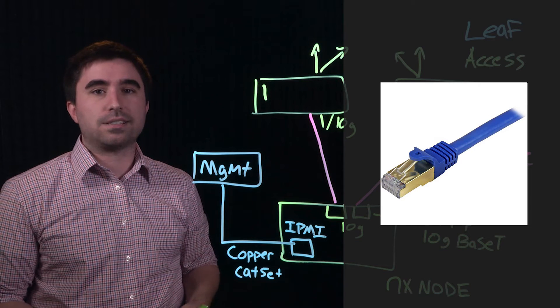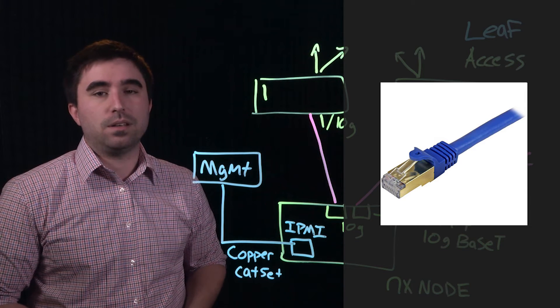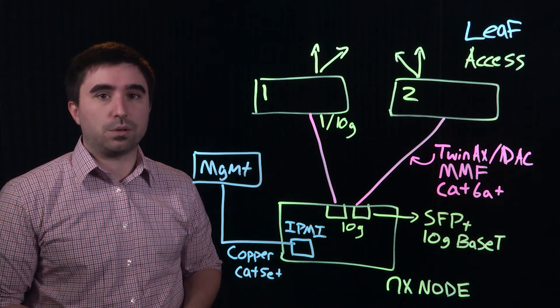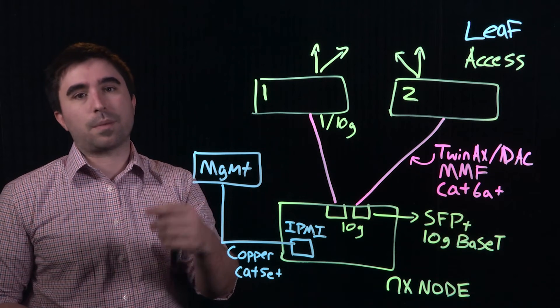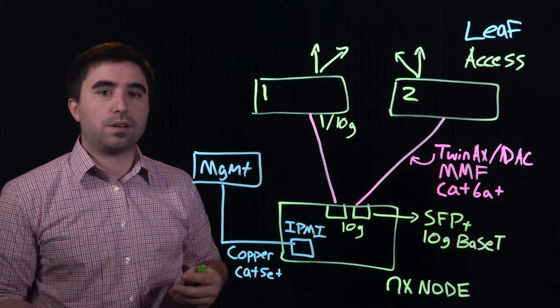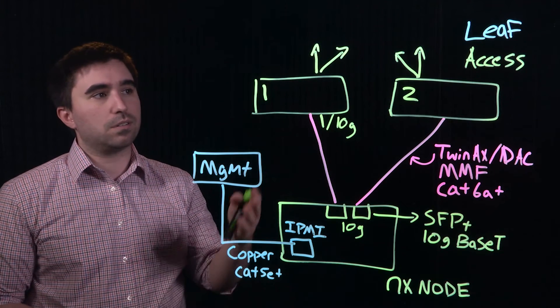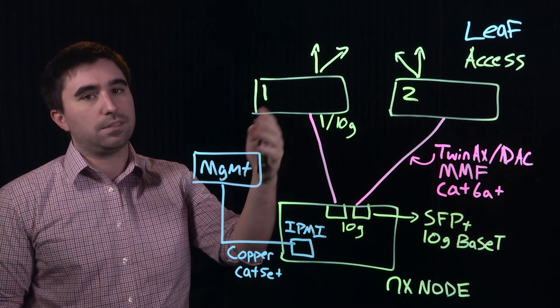Each Nutanix node also has an out-of-band hardware management port. This port is used for things like remote KVM console and power control and is typically connected to a separate management switch. Depending on your network and security policies and your available network hardware, you can also connect this switch directly to the access and leaf layers.